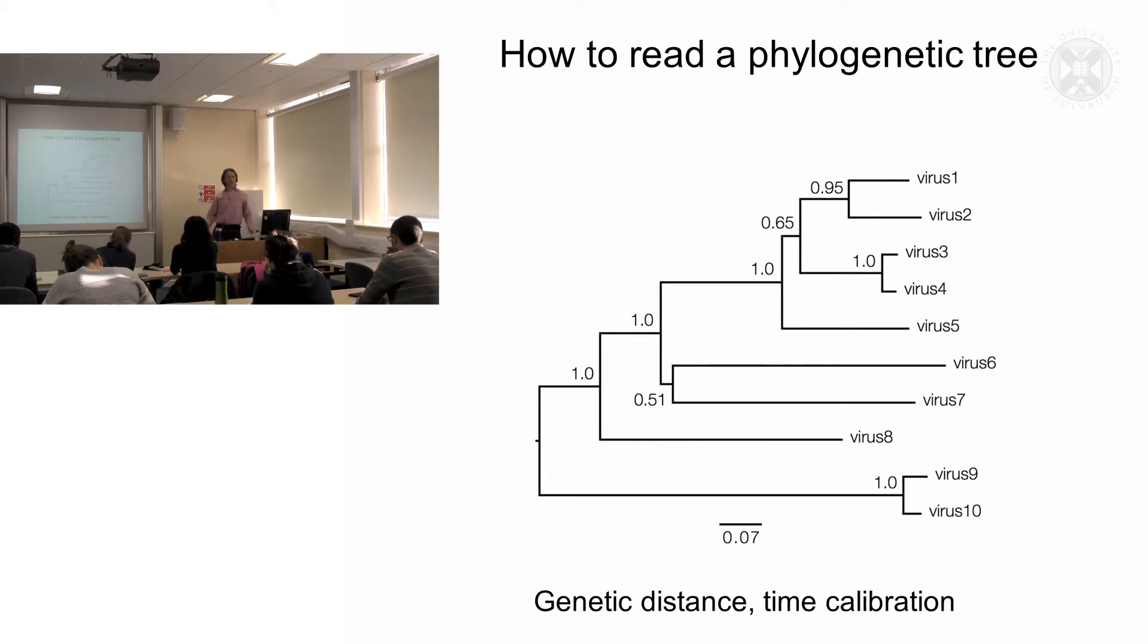This roughly speaking is also a measure of the time since these viruses diverged. So the greater the length of the branches, the greater the likelihood that it is a longer period of time since divergence from the most closely related sequences.